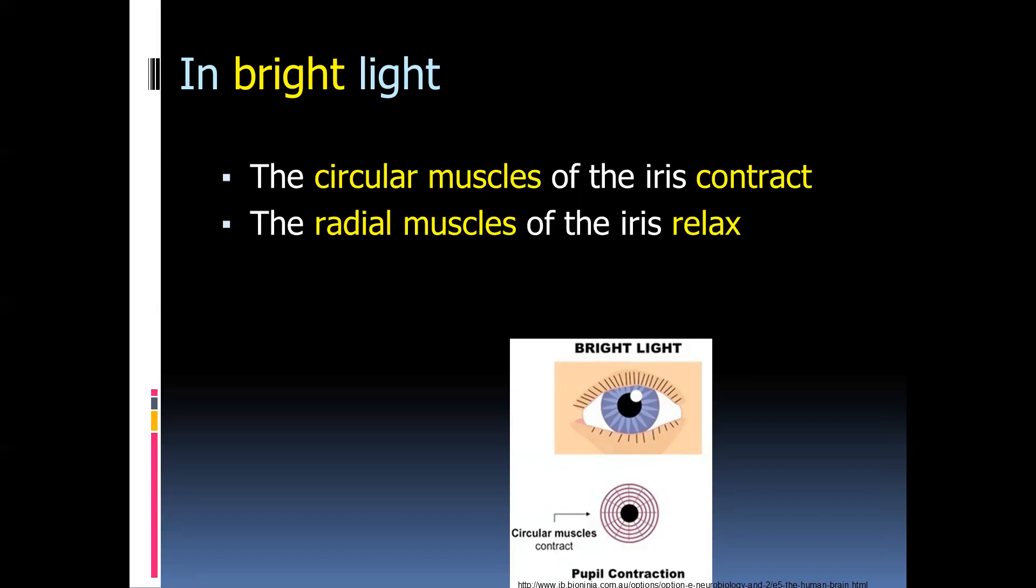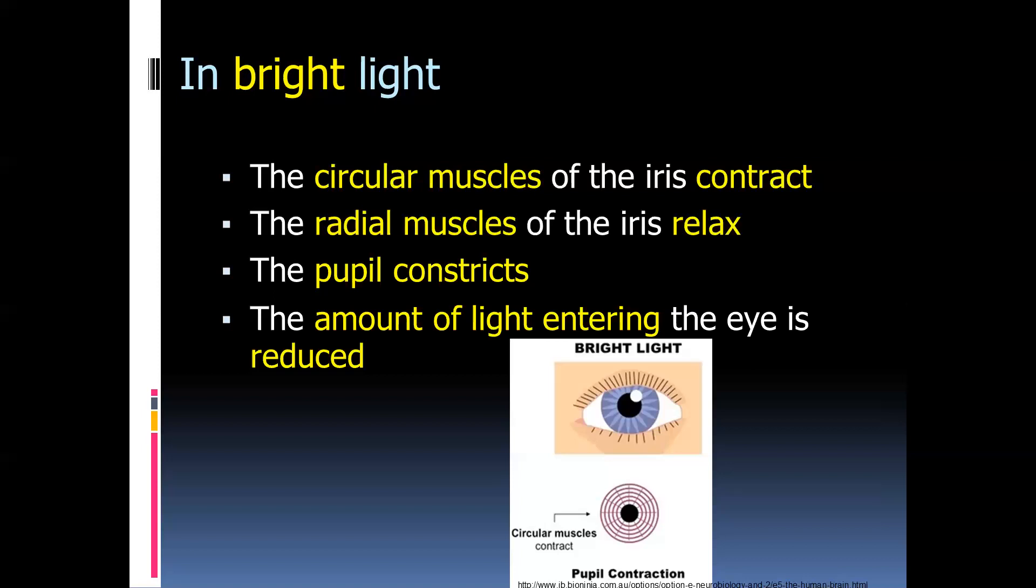We say that they are antagonistic. When the circular muscle contracts, the radial muscle will relax, and when the circular muscle relaxes, the radial muscle will contract. In the case of bright light, the circular muscles of the iris contract, making those circles smaller, and the radial muscles relax and elongate. This leads to the size of the pupil decreasing, but the correct terminology is that the pupil constricts. As a result, less light enters the eye, allowing for vision in bright light conditions and preventing excess light from going into the eye.